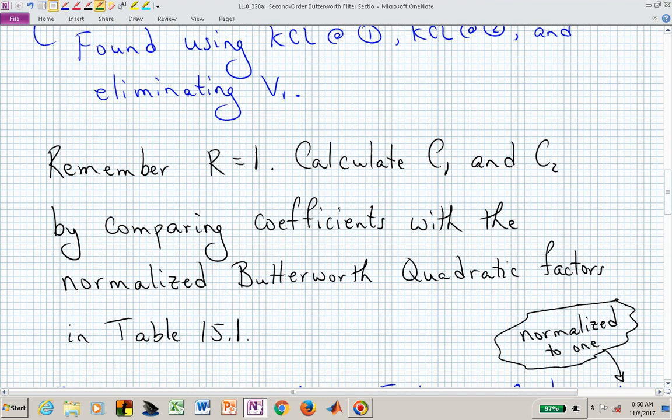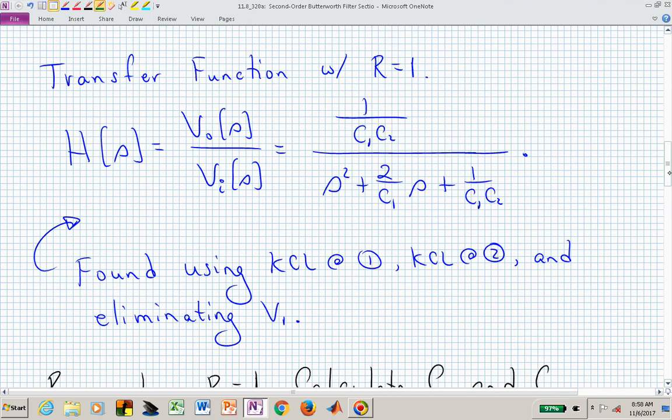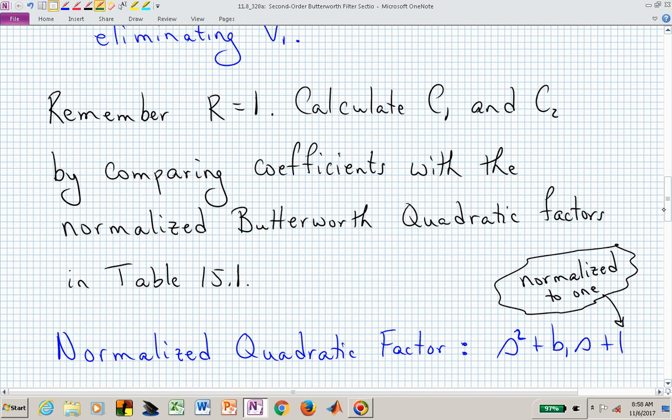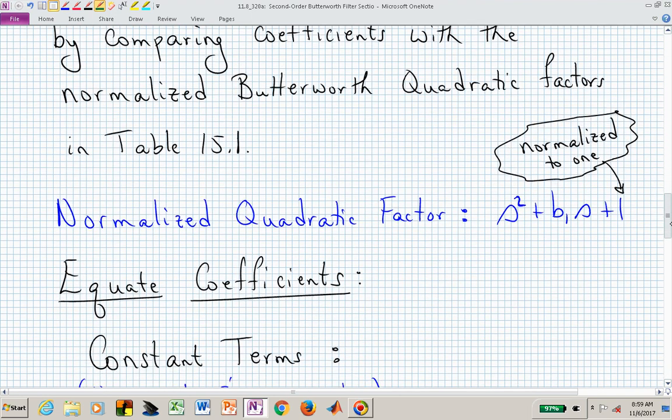That being said, let's do that. And let's go ahead and do that for this particular video. Let's just compare C1 and C2 in this expression with this generic structure, this normalized quadratic factor. It's normalized to 1. All of those have been normalized in table 15.1. So we need to force that constant coefficient to equal 1 by the choice of C1 and C2, and then we need to pick D sub 1 in terms of C sub 1 and C sub 2.